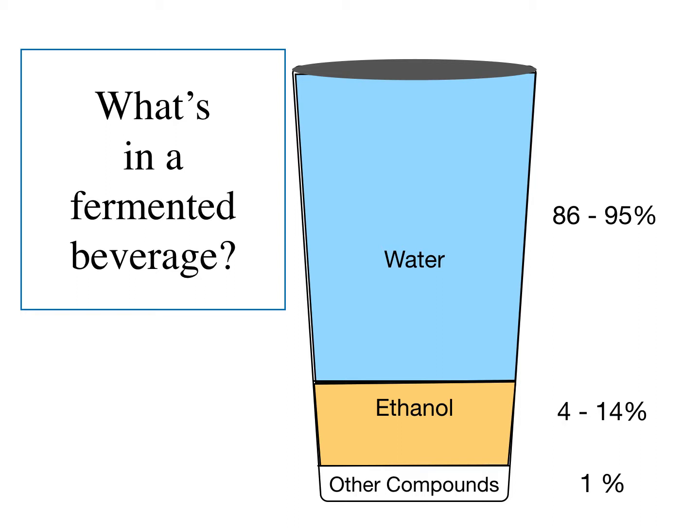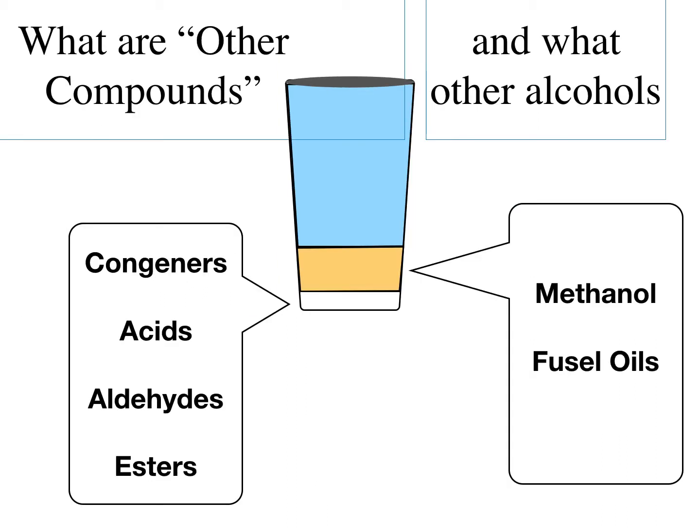Breaking down a fermented beverage, my diagram highlights that it's mostly water. Then there's the ethanol component — that's the alcohol we're looking for — and a small amount of something called other compounds. What are other compounds? Your book highlights the term congener, and there are also acids, aldehydes, and esters. Esters are often associated with aroma, while congeners are associated with flavor. These are all developed during fermentation. On the alcohol side, you're familiar with ethanol, but there are other alcohols too: methanol and fusel oils, which are often associated with the components that can impact how much of a hangover we experience.